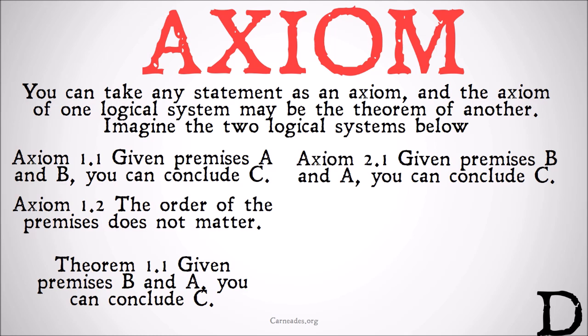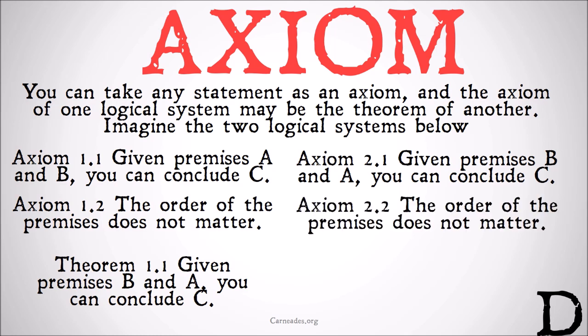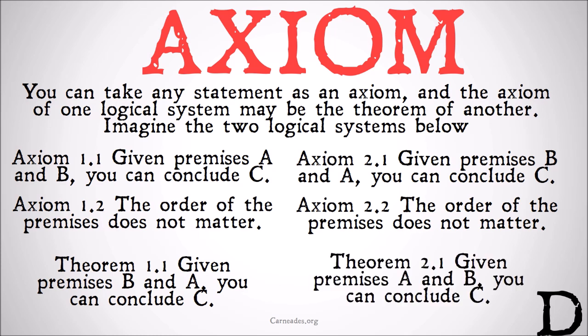On the other hand, we could have a logical system that framed it the opposite way — taking as an assumption that given premises B and A you can conclude C, keeping the same second axiom that the order of premises doesn't matter, and concluding as its theorem that given premises A and B you can conclude C. The point is that one logical system may take one set of axioms, another may take a different set, and they may show exactly the same things are true, but differ in what counts as an axiom and what counts as a theorem.